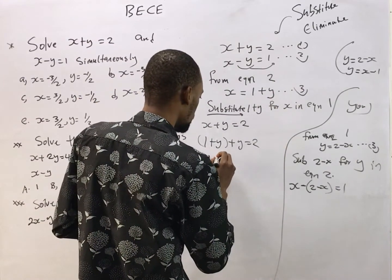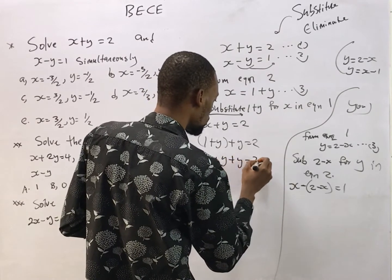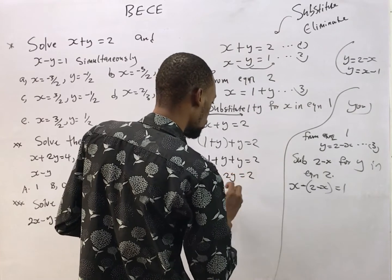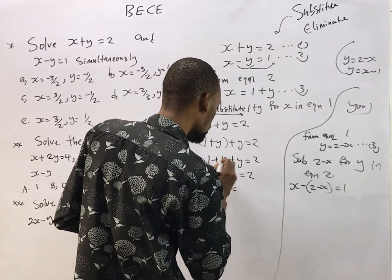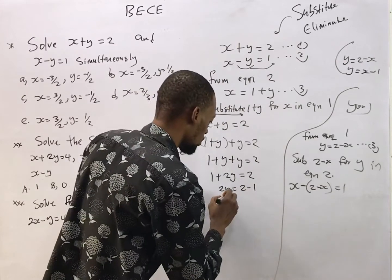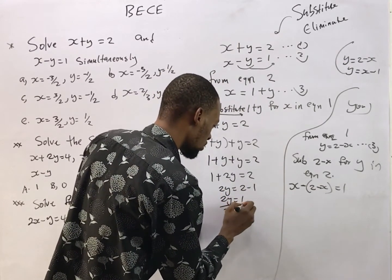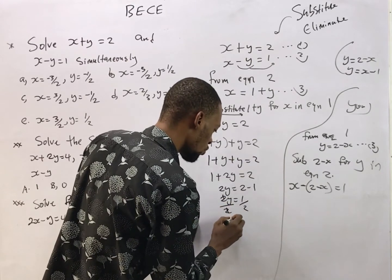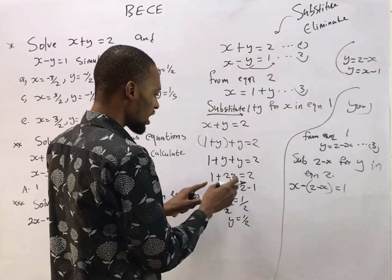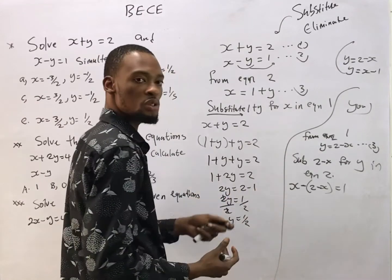Simplifying my version: 1 plus y plus y equals 2, which gives 1 plus 2y equals 2, so 2y equals 2 minus 1, meaning 2y equals 1. Dividing both sides by 2, y equals 1 over 2.